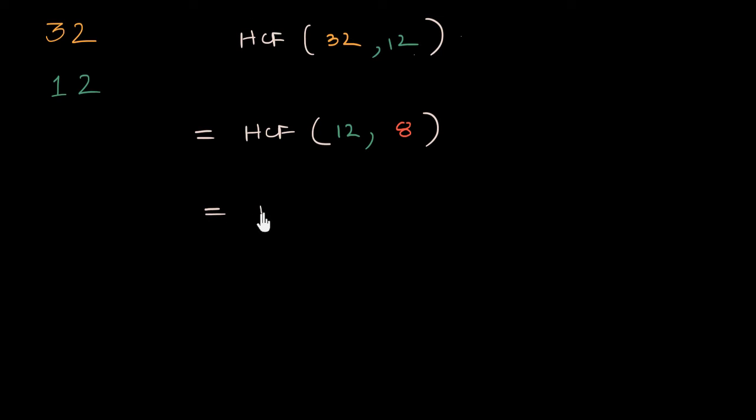This is equal to the HCF of, once again, that's right, the smaller number, the smaller number, and the remainder that you will get if you divide the bigger number by the smaller number, which, in this case, if you divide 12 by 8, you'll get a remainder of 4, because 8 will go once. Now, once again, you ask the same question. Is 8 divisible by 4? And in this case, the answer is yes. 4 will be the HCF.